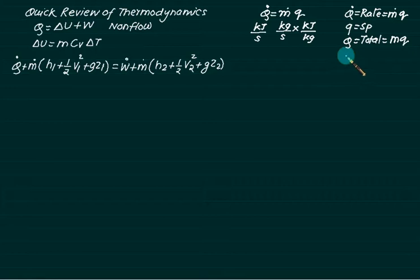Similarly, for W dot, we can write it as M dot multiplied by specific value, specific work W. Total work is given by M multiplied by W. Follow this notation, your subject will become more simple.